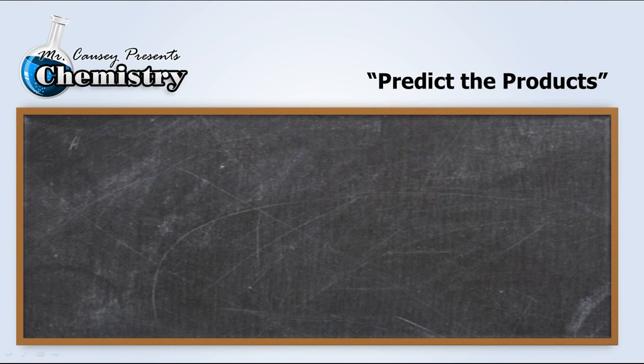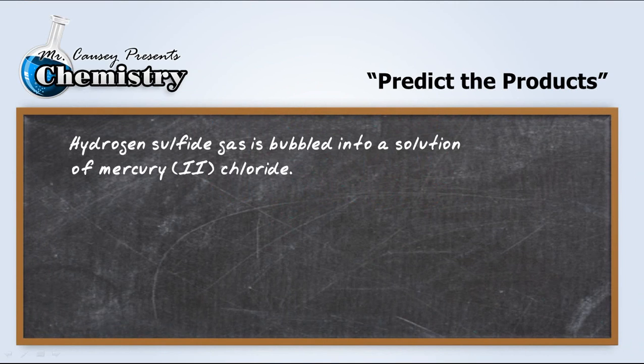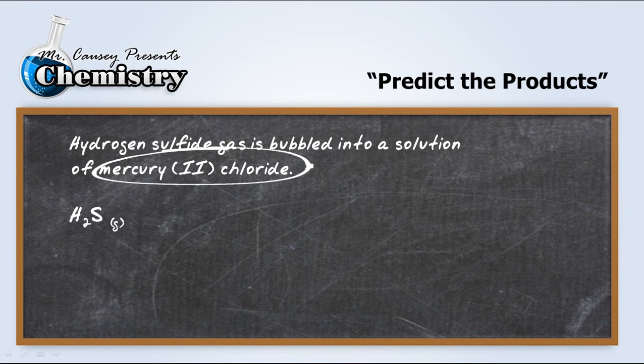Let's predict the products. Hydrogen sulfide gas is bubbled into a solution of mercury 2 chloride. So we have hydrogen sulfide gas, and that would be H2S. And then we are going to bubble that into a solution of mercury 2 chloride.